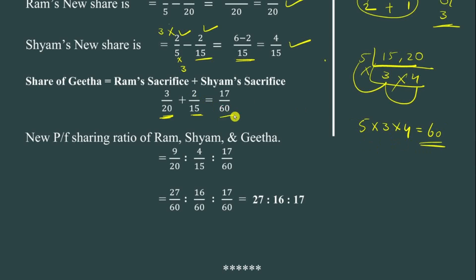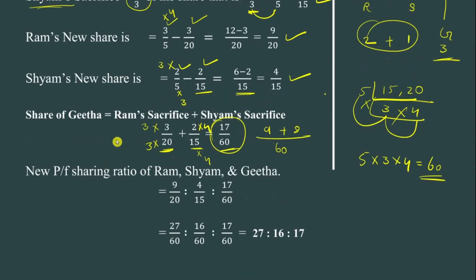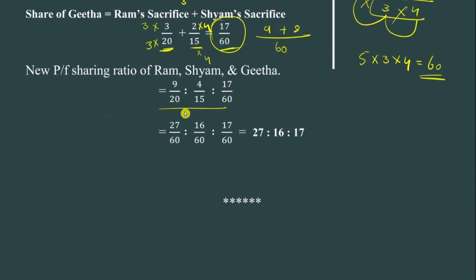With LCM = 60 as the base: for 3/20, multiply by 3 → 9/60; for 2/15, multiply by 4 → 8/60. So Gita's share = 9/60 + 8/60 = 17/60. Now we have Ram's new share 9/20, Sham's new share 4/15, and Gita's new share 17/60.